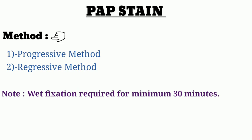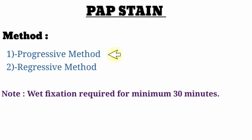Method for Pap staining: there are two methods — the progressive method and the regressive method. Important note: wet fixation is required for a minimum of 30 minutes in Pap staining. The fixation used is wet fixation, done for at least 30 minutes before staining.